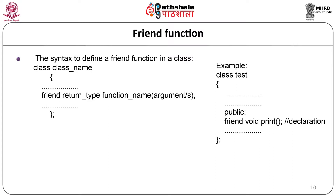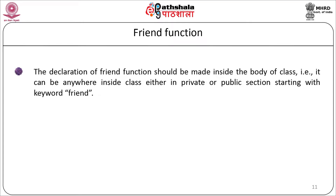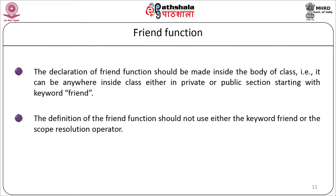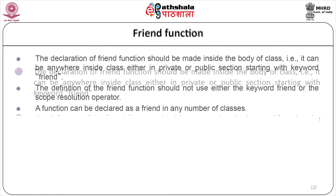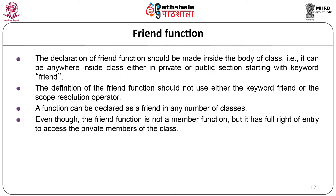For example, class `Test` with `friend void print` declared in the public section. Only the declaration is inside the class; the actual definition of the friend function is outside the class. The declaration can be anywhere inside the class - either in private or public section - starting with the keyword `friend`. The definition of the friend function should not use the keyword `friend` or the scope resolution operator. A function can be declared as a friend in any number of classes, and even though a friend function is not a member function, it has full right to access the private members of the class.